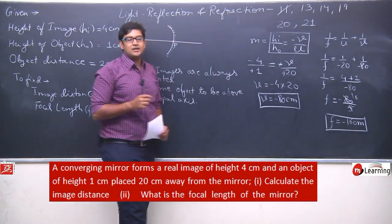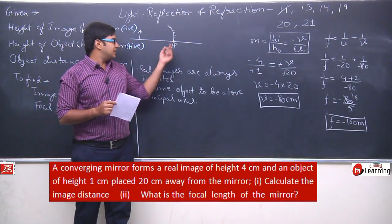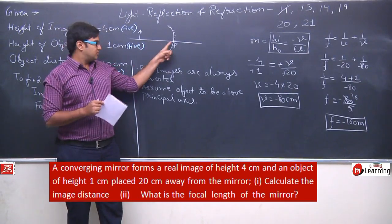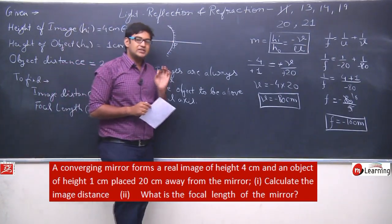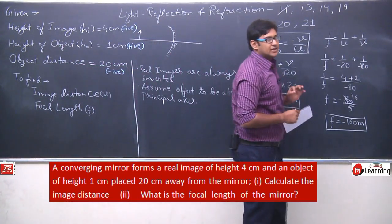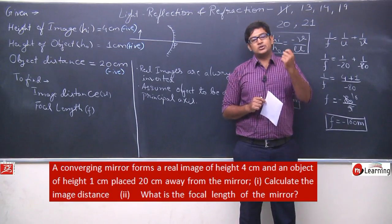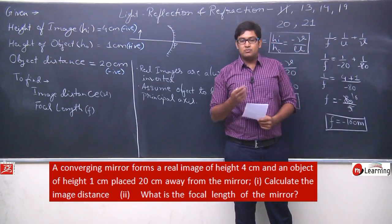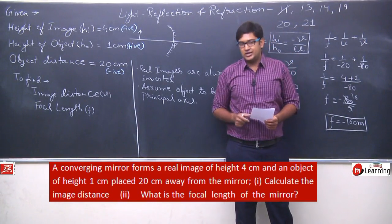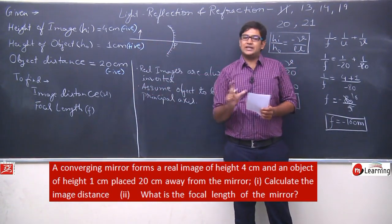f = −16 centimeters. The negative sign confirms it is a concave mirror — the focus is on the same side as the pole. Sign convention is very important. If even one sign is taken incorrectly, the entire question will be wrong and you will get no marks. Be very careful with sign convention.